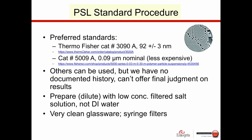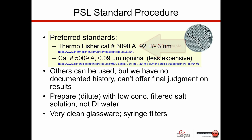When using the NICOMP, two specific standards are suggested: both from Thermo Fisher, both nominal 90 nanometer standards. One is NIST-traceable and one is less expensive but gives equally good results. These are the two samples typically used to test the accuracy of the system.